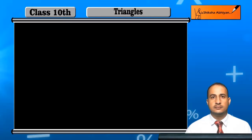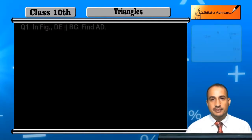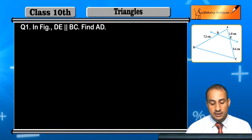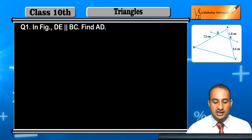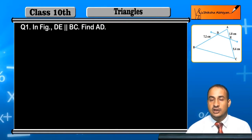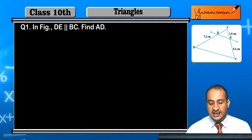Now students, we will start the first exercise of chapter Triangles. See the first question - in the figure, you can see triangle ABC where DE is parallel to BC. DE is parallel to one side of the triangle BC. Find AD.